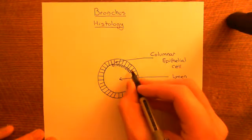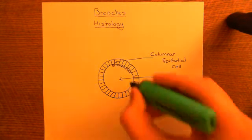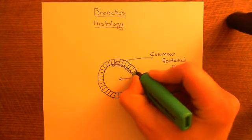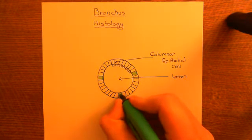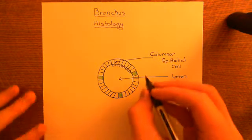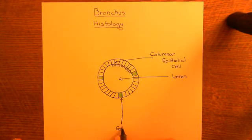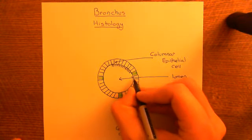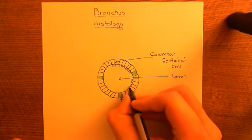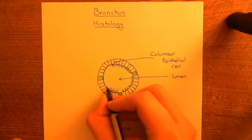Not all of the cells lining the lumen will be epithelial cells. Some will be what are known as goblet cells, interspersed among the ciliated epithelial cells. The role of the goblet cells is to secrete the mucus that lines the lumen of the airway. The goblet cells will not have cilia, but the columnar epithelial cells will be ciliated.